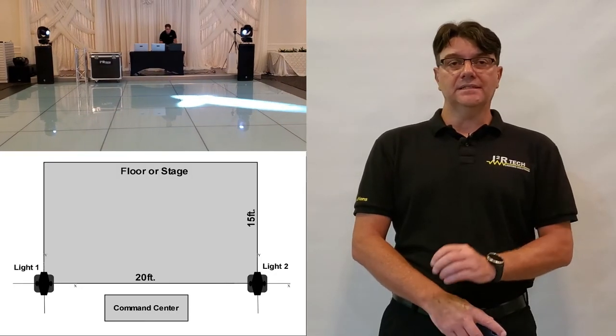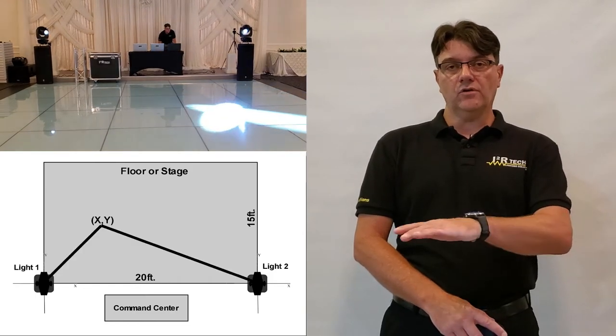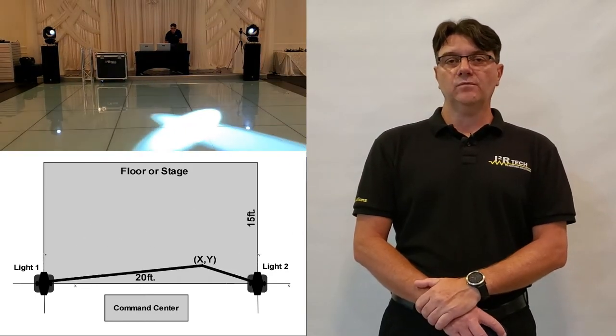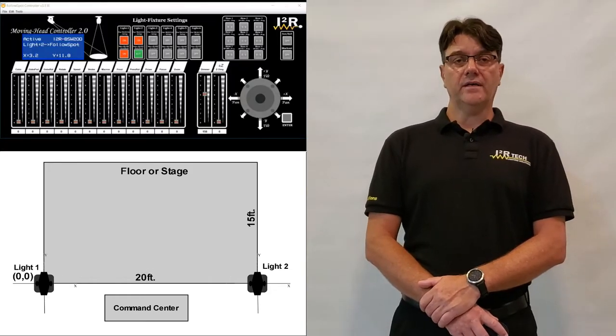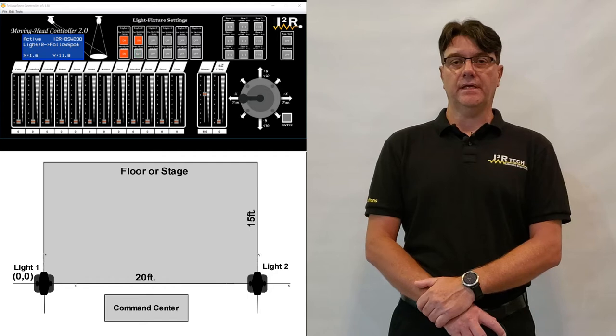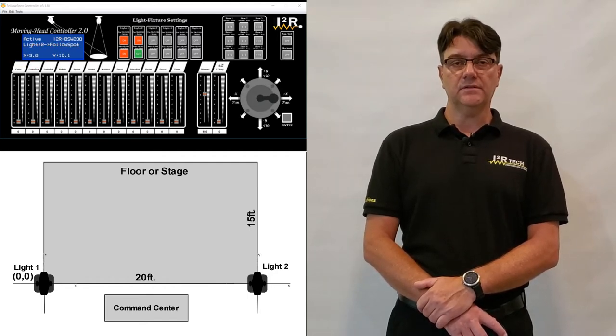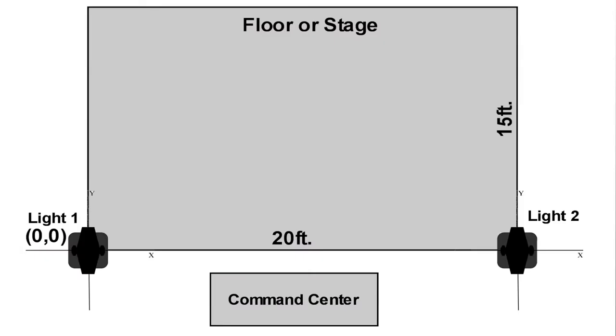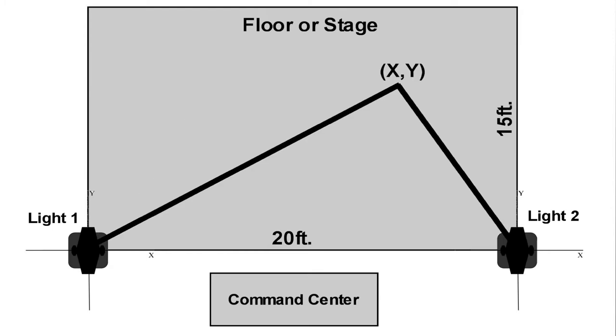In follow spot mode, the joystick does not control the pan or tilt angles for any of the lights, but instead controls the actual spotlight's location on the floor or stage as X and Y coordinates. The X and Y coordinates are shown on the LCD display. They are the relative distances to a reference point chosen during calibration. The moving head controller 2.0 will do the required calculations to find the proper pan and tilt angles for each light so they all aim to the same X and Y coordinate location.